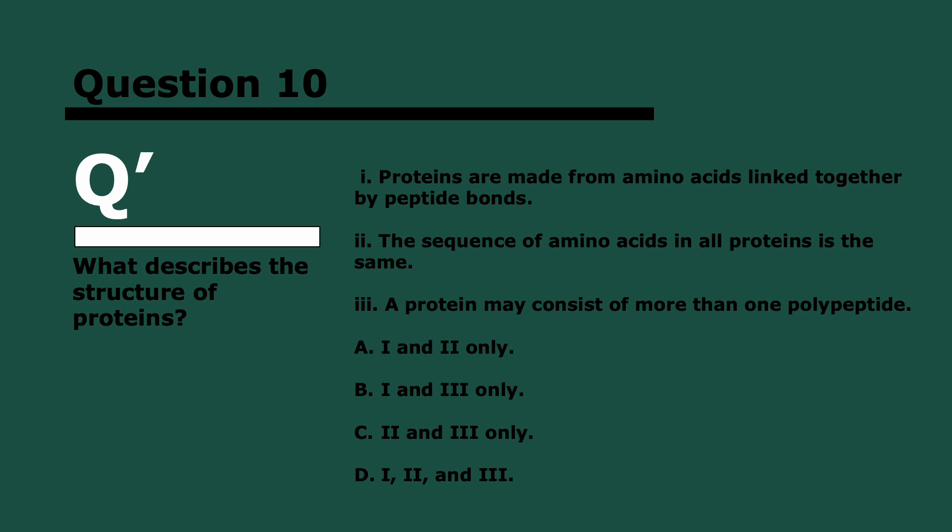Question 10. What describes the structure of proteins? Think about it, I think this is pretty easy. Three, two, and one. One and three. The sequence of amino acids in all proteins is the same makes no sense because then all proteins would be the same, so two is false. One is true, proteins are made from amino acids linked together by peptide bonds. That's how you form a polypeptide, and then it folds becoming a protein. Three is true, a protein may consist of more than one polypeptide. That's the quaternary structure of a protein.